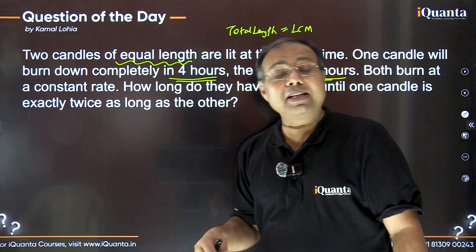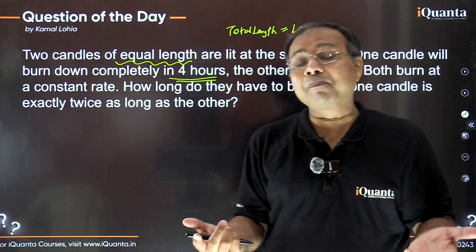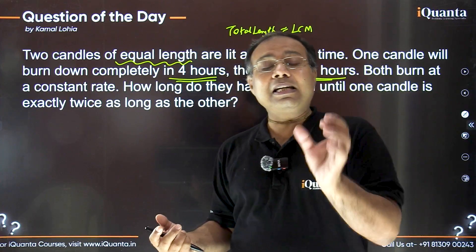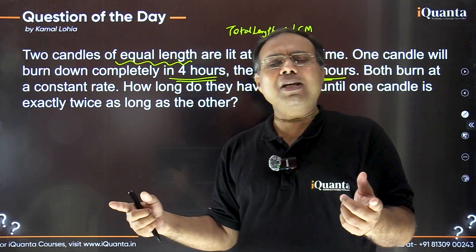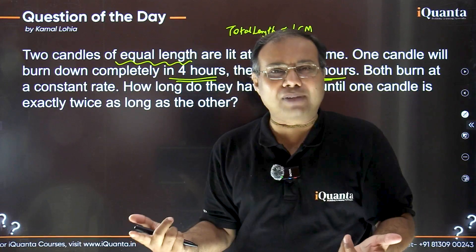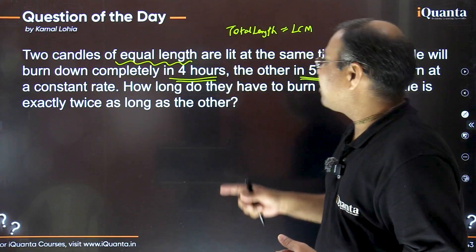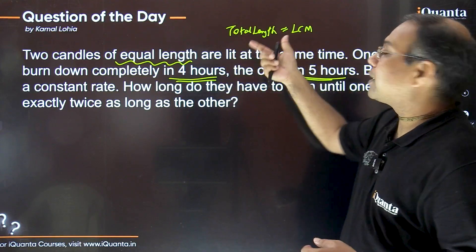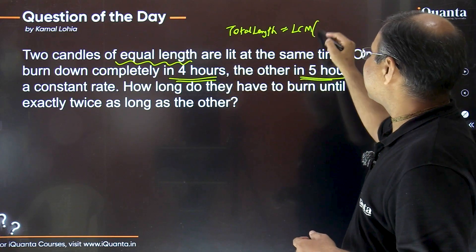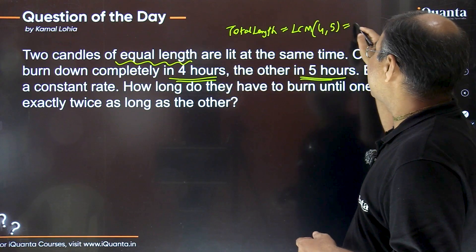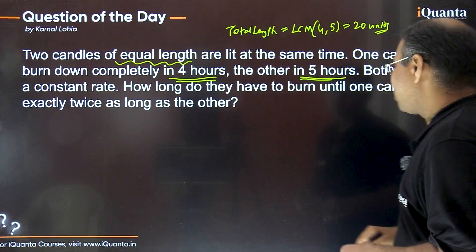Just as we do in a normal time and work problem — where we assume the total work to be the LCM of the individual times to make calculation simpler — the same way here we assume the total length of each candle to be the LCM of four and five, which comes out to be 20 units.